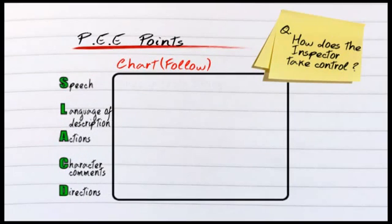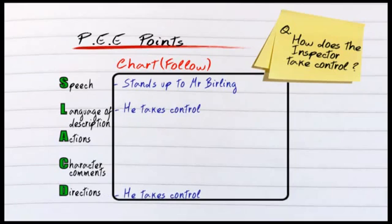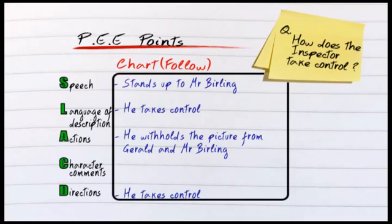For example, at the beginning in his speech, the inspector stands up to Birling. In the language of description or from the directions, it says he takes control. In his actions, he withholds the picture from Gerald and Mr. Birling. Other character comments include when Sheila seems to think he is odd. These are your actual main points, but you have to write them into PEE. I just wanted to show you first that it has to be charted all the way through.